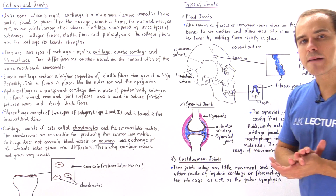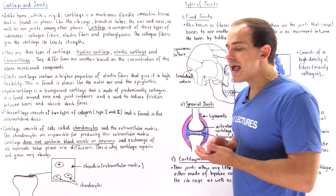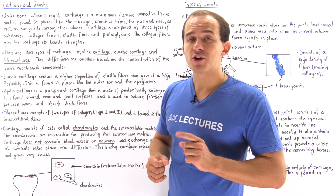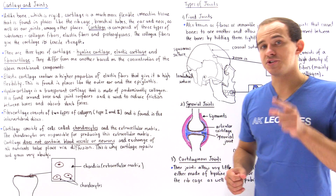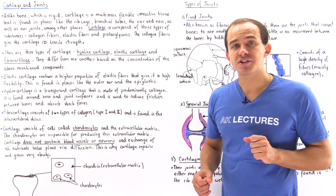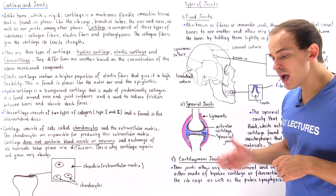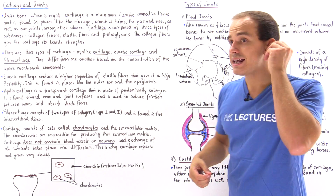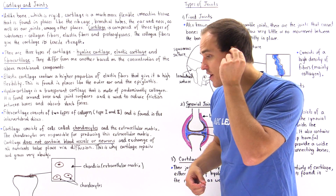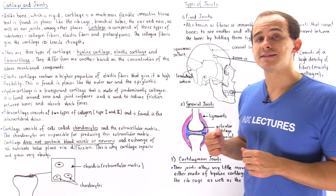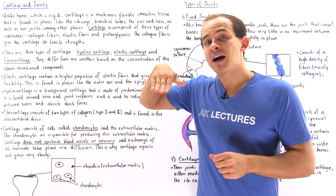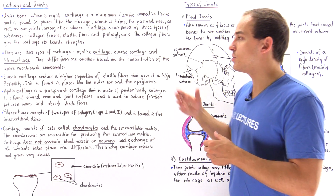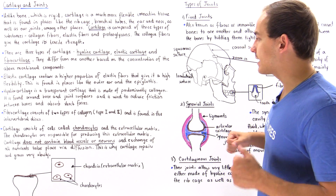The second type of cartilage is the elastic cartilage, which contains a high proportion of elastin fibers, making it very flexible. It is found in our outer ear, which is very flexible, as well as in our epiglottis, which constantly has to move and must remain flexible. The epiglottis is found inside our neck.